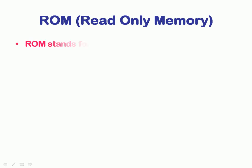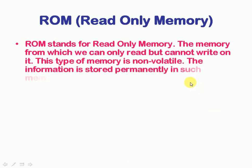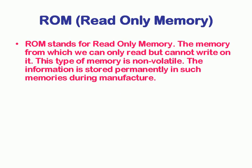ROM stands for Read Only Memory, and it means that we cannot write anything on it. It is non-volatile in nature, and the information is stored permanently during manufacturing. In contrast, RAM was read and write memory — it was volatile in nature, meaning if your system powers off while you are typing data, that data will be lost. In the case of non-volatile memory like ROM, the information is permanent.